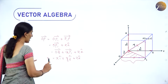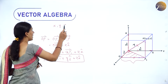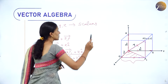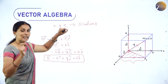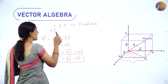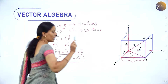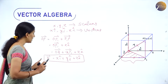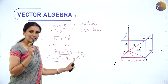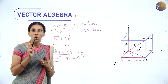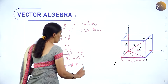So OP = vector R = x·î + y·ĵ + z·k̂. This is called the component form of a vector, where x, y, z are scalars representing the distances from the x, y, and z axes to point P. When multiplied by the unit vectors î, ĵ, k̂, they become vector components indicating direction. Any vector in the coordinate system can be represented as vector R = xî + yĵ + zk̂.